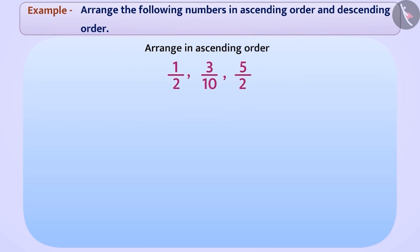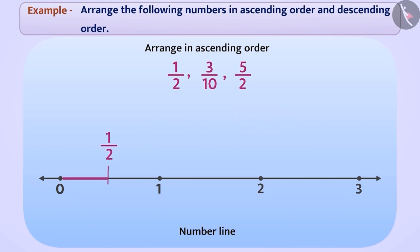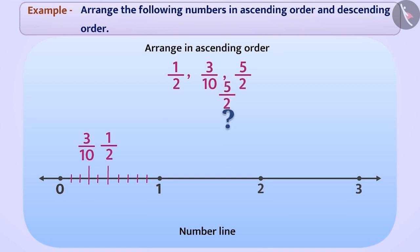The positive rational numbers are 1 by 2, 3 by 10, and 5 by 2. Let's express them on a number line. In 1 by 2, the numerator is smaller than the denominator. Therefore, the position of 1 by 2 can be represented by dividing the distance between 0 and 1 in two equal parts and taking one part. Similarly, the position of 3 by 10 can be represented by dividing the distance between 0 and 1 in ten equal parts and taking three parts out of them.